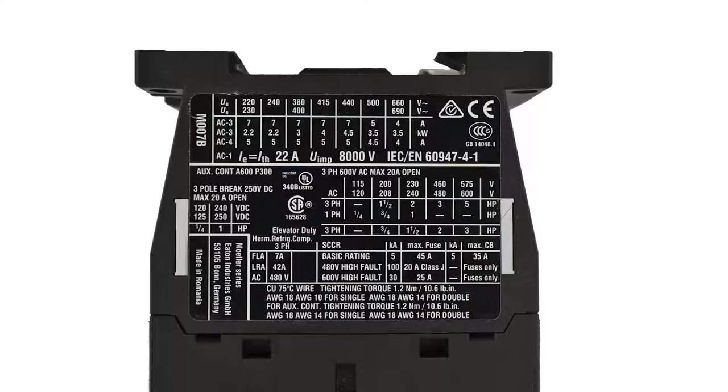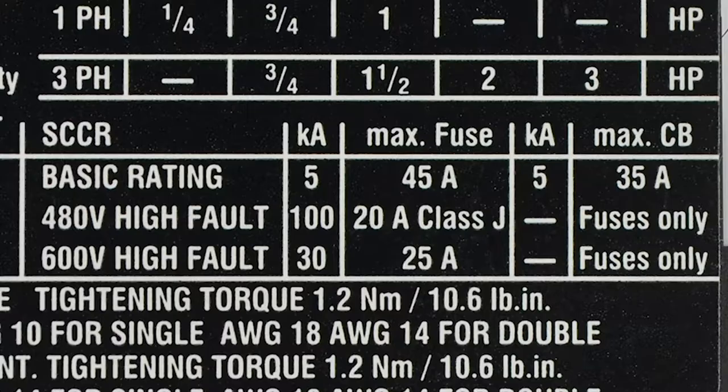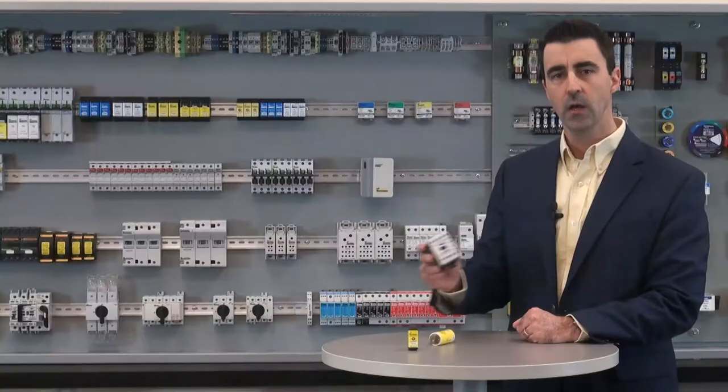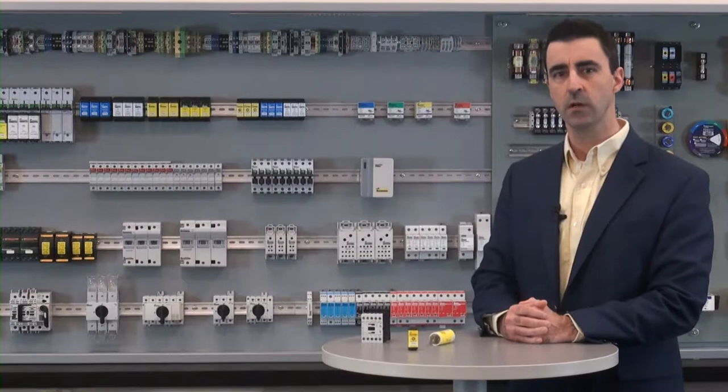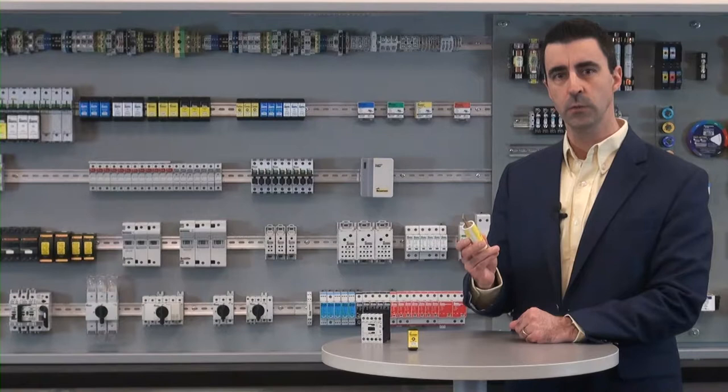An example is this contactor with a 5,000 amp default short circuit current rating. However, this same contactor has a 100,000 amp short circuit current rating when protected by a max 20 amp class J fuse due to its current limitation.